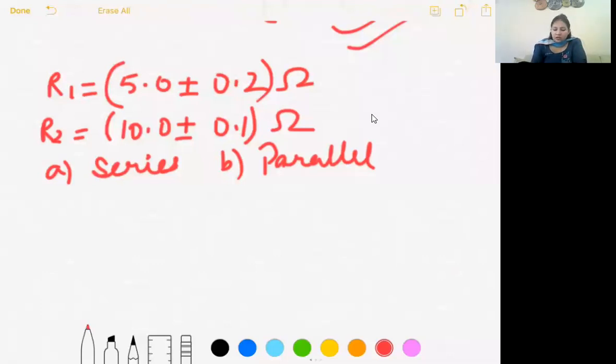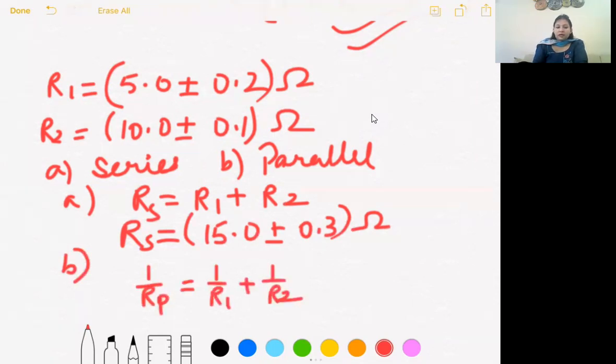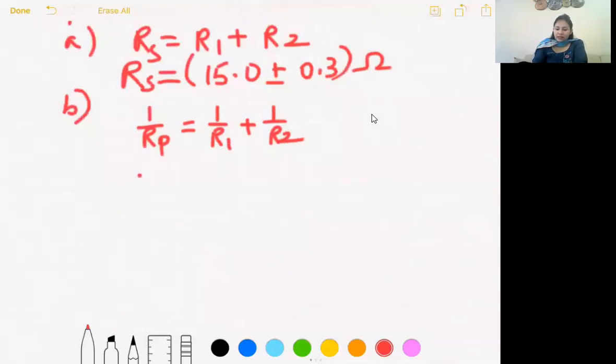So we have to tell the equivalent resistance within error limit when they are connected in series and then in parallel. In series it is simple. That's the sum of individual resistance. So what will your answer be? 15.0 plus minus 0.3. Add the errors and quantities. The main thing is how to do it in parallel. You know that in parallel we add the reciprocals. So after taking LCM you will get R1 R2 over R1 plus R2.